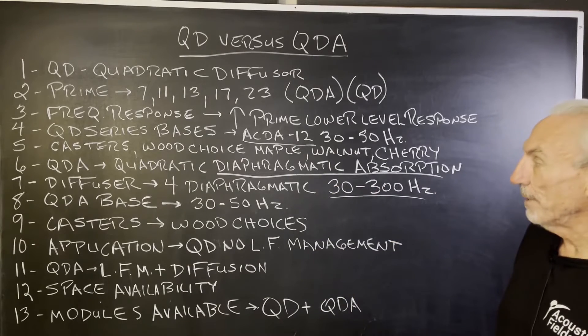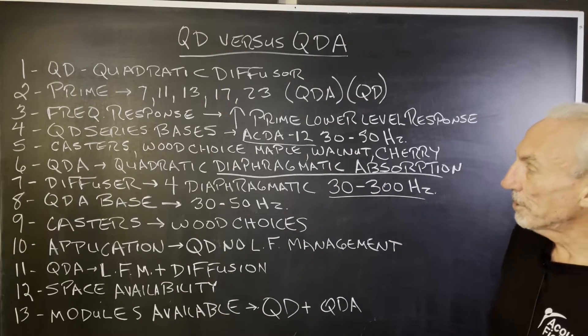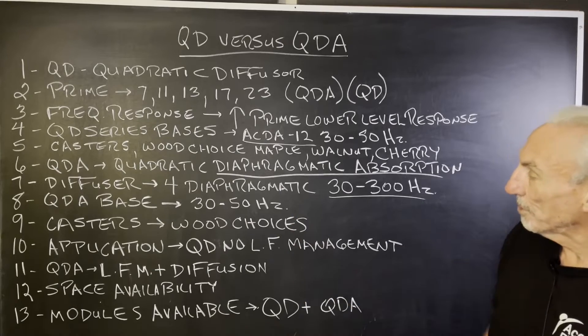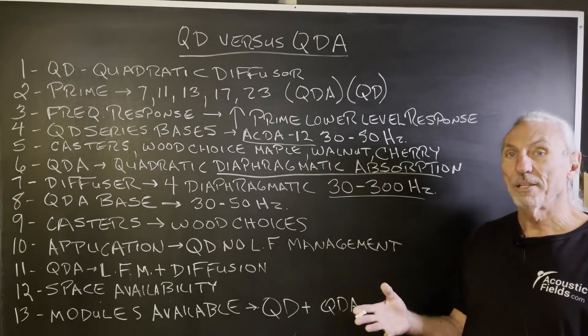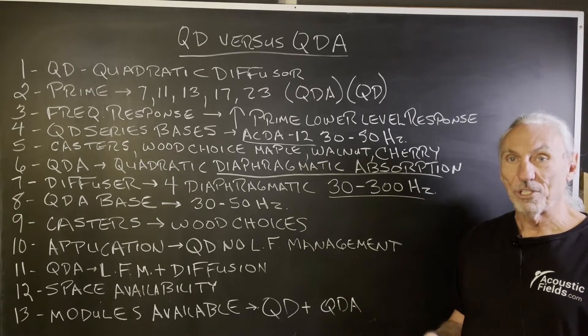So we get this broadband absorber behind the diffuser. Then we have the QDA base, which is 30 to 50 hertz. So we get both of our technologies and diffusion in one product.